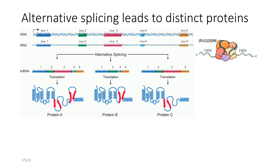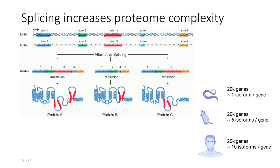So I don't need to tell you how splicing works, but I do want to emphasize that alternative splicing leads to distinct proteins being formed and that vastly expands the proteome complexity, thereby leading to humans being slightly more complex than the worm.